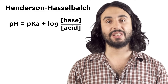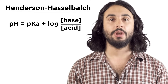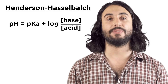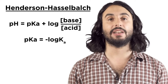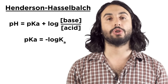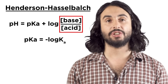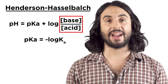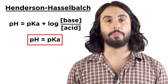Buffer solutions of a particular pH can be prepared using the Henderson-Hasselbalch equation. pH is the negative log of the hydronium concentration, and pKa is similarly the negative log of the Ka for that acid. What this shows us is that in order to create a buffer solution of a desired pH, we must use an acid-conjugate base pair where the Ka is approximately equal to the desired hydronium concentration — or rather, where the pKa is equal to the pH.